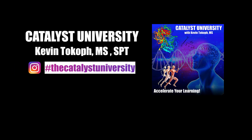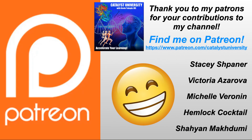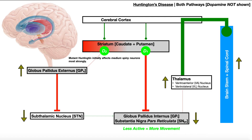Welcome back to Catalyst University. My name is Kevin Tokoff. Please make sure to like this video and subscribe to my channel for future videos and notifications. A big thank you to my patrons on Patreon for your contributions. In this video, we're going to talk about Huntington's disease. We'll start off by briefly discussing its pathophysiology, then move into its signs and symptoms, and then talk specifically about how it affects the basal nuclei, which will explain why it leads to the effects that it does.